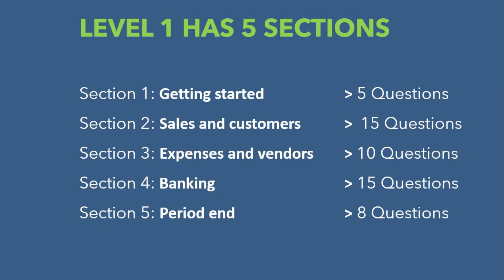There are five sections in the Level One exam pattern. Section one is called Getting Started with five questions. Section two is Sales and Customers with 15 questions. Section three is Expenses and Vendors with 10 questions. Section four is Banking with 15 questions. Section five is Period End with eight questions.